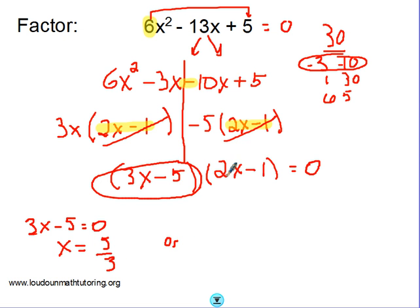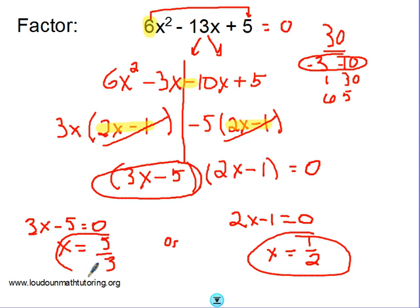Or what makes this one 0? 2x minus 1 equals 0. To solve that small algebra equation, you would add 1 to both sides and then divide by 2. So x is equal to 5 thirds or x is equal to 1 half. That's called the zero product property when you're solving these two binomials to see what makes the equation equal to 0.